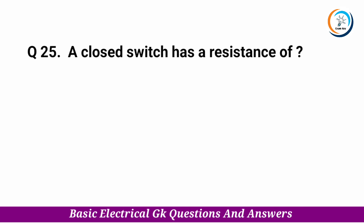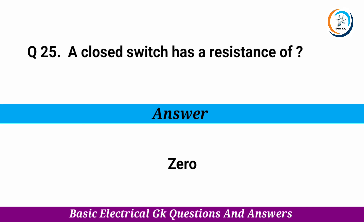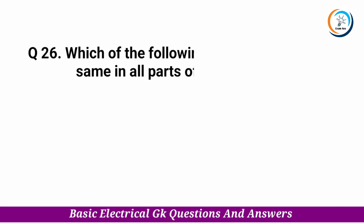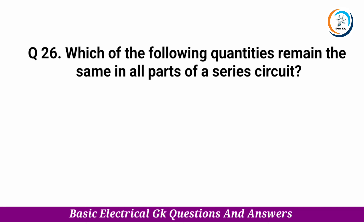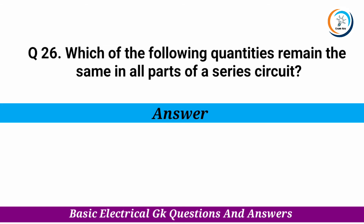A closed switch has a resistance of — Answer: zero. Which of the following quantities remains the same in all parts of a series circuit? — Answer: current.